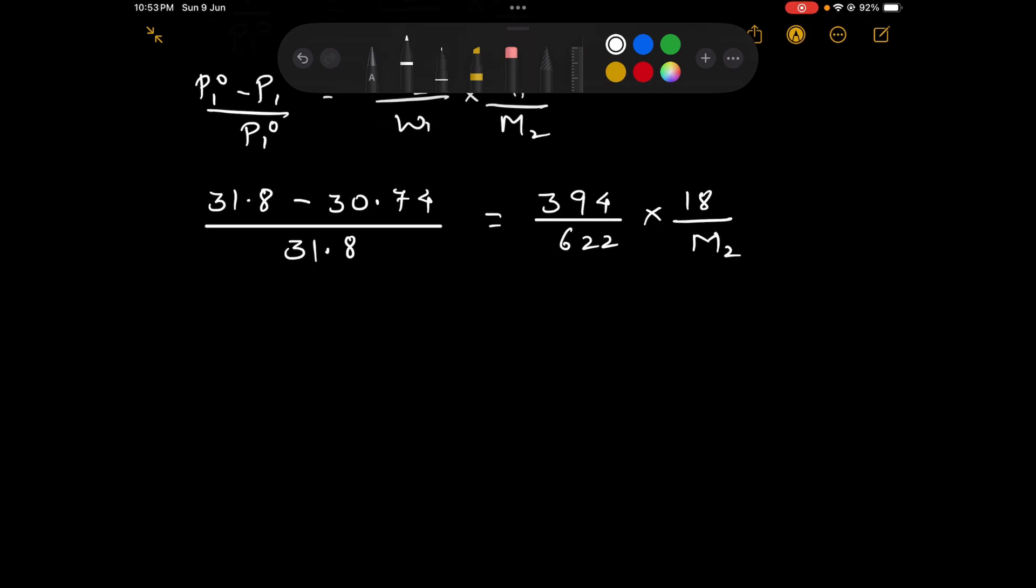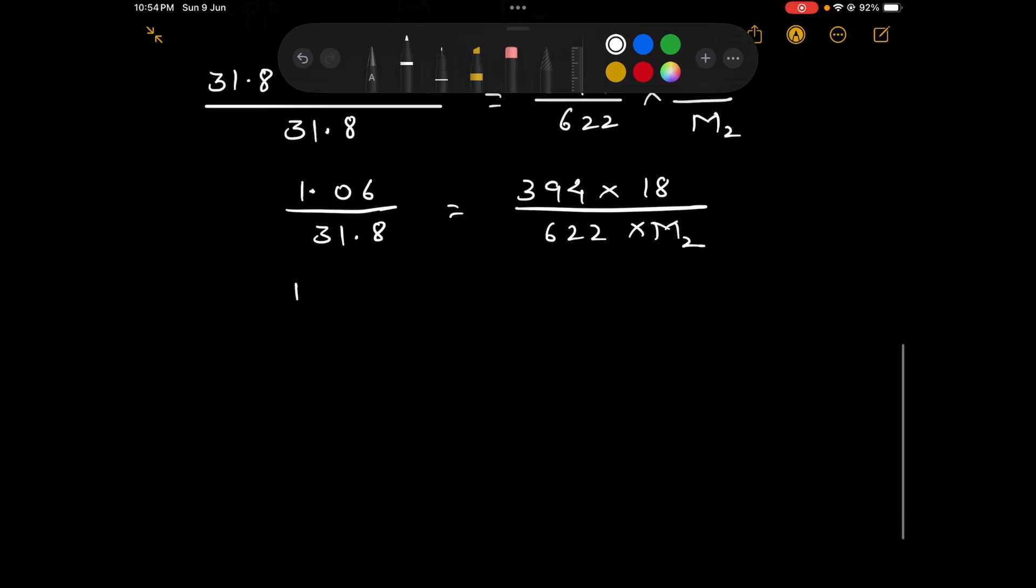So 31.8 minus 30.74 gives us 1.06 upon 31.8. This equals 394 times 18 upon 622 times M2. So let us rearrange and we get M2 equals 31.8 times 394 times 18 divided by 1.06 times 622.